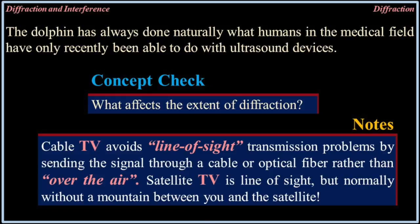Concept check: What affects the extent of diffraction? Cable TV avoids line-of-sight transmission problems by sending the signal through a cable or optic fiber rather than over the air. Satellite TV is line-of-sight, but normally without a mountain between you and the satellite.